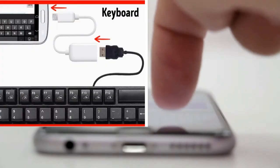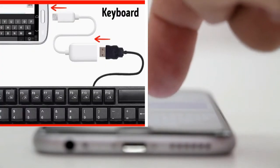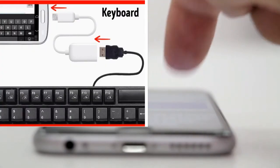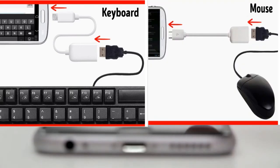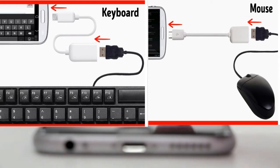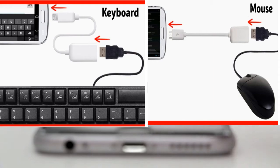Tip 2: Keyboard and Mouse. Android supports mice and keyboards. This can be very useful if your display is damaged or if you just need to type a lot of text. All you need to attach a keyboard or mouse to your Android phone is a USB On-The-Go cable.